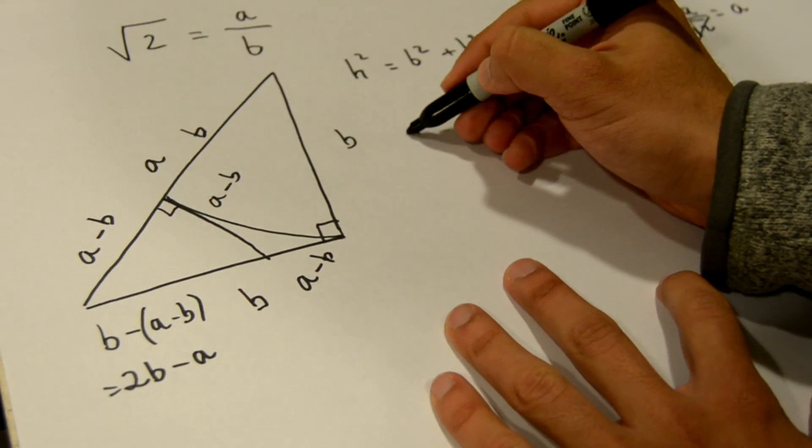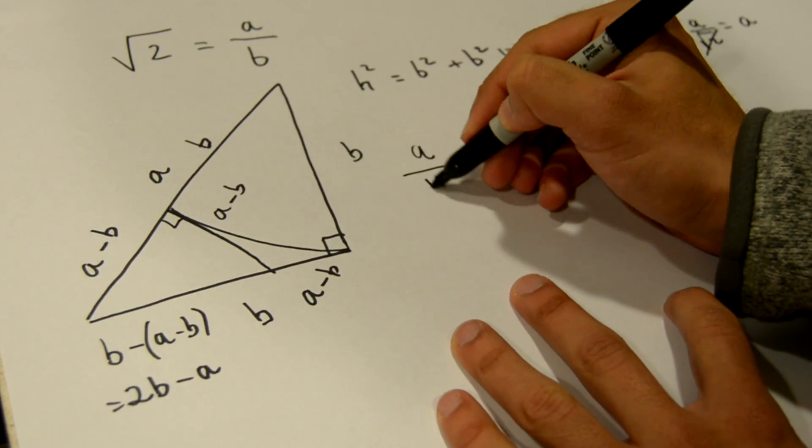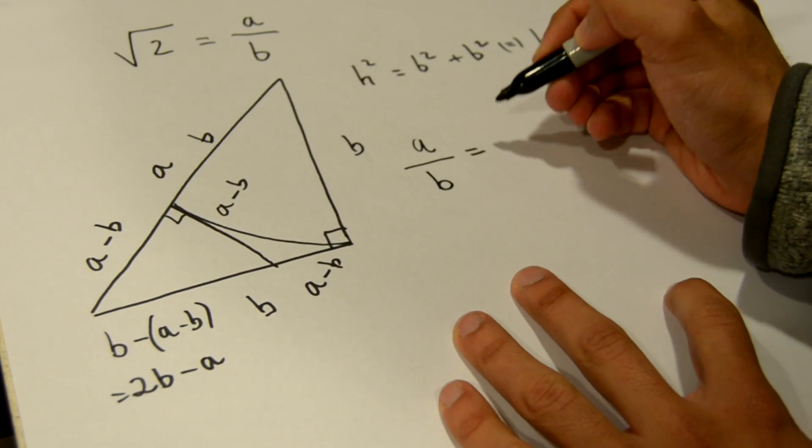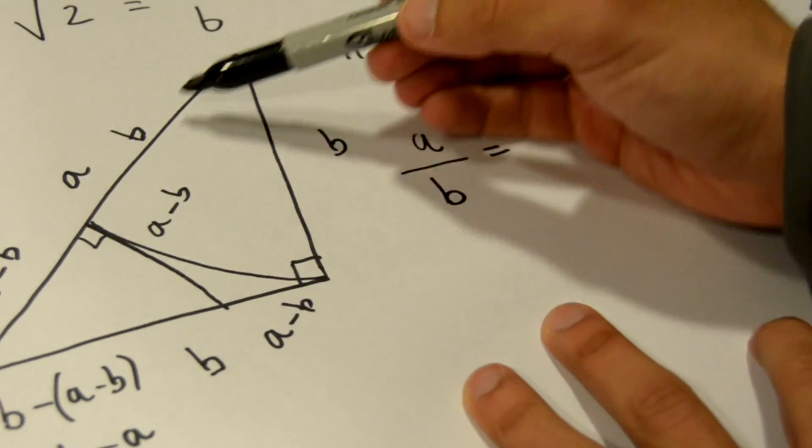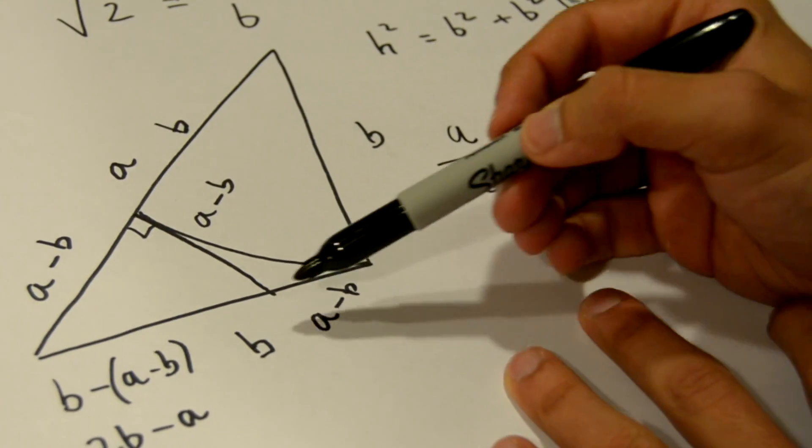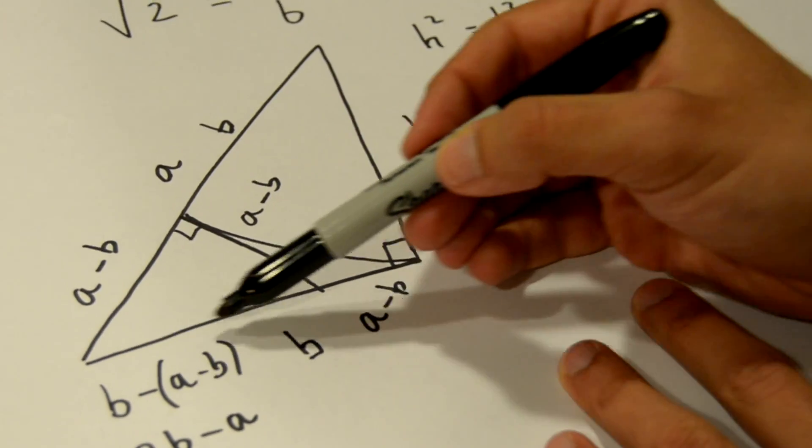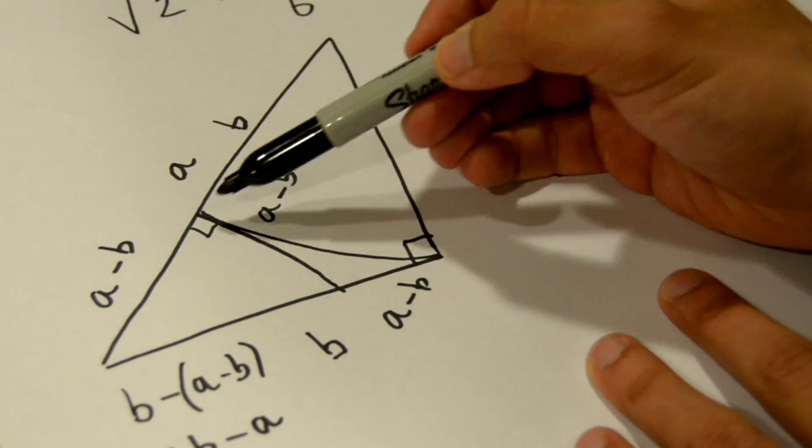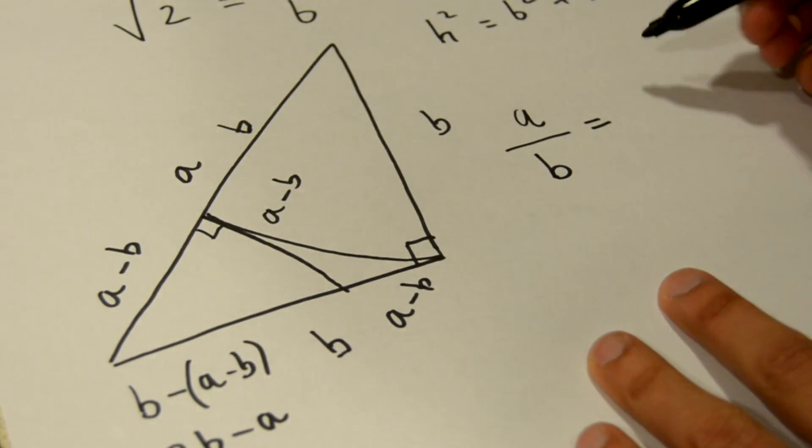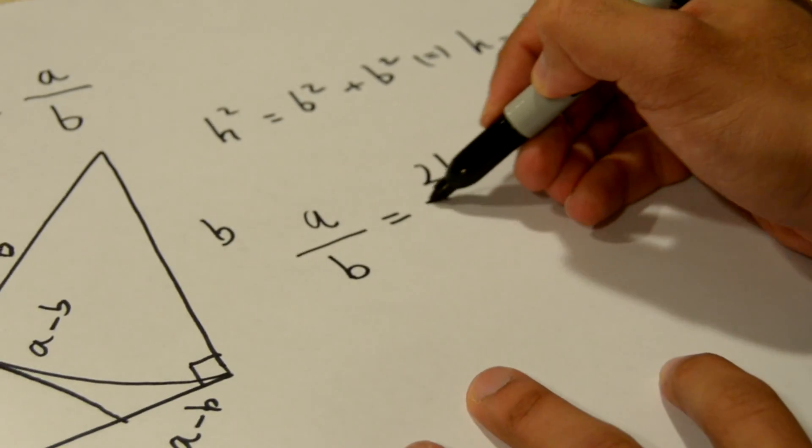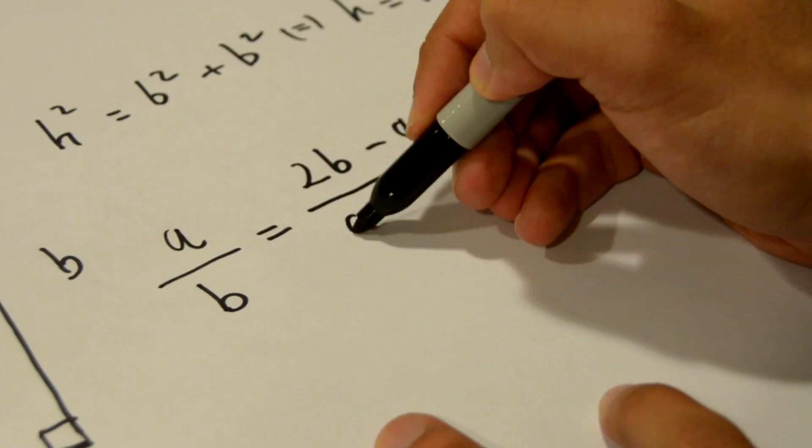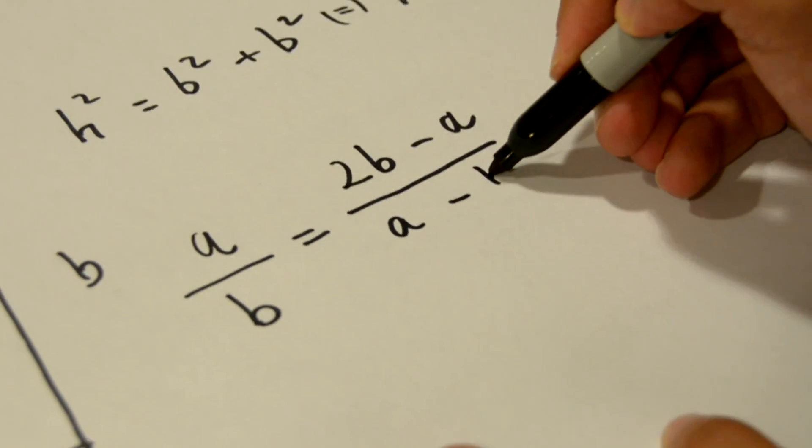we have a over b has to equal the ratio of the hypotenuse to this side, which equals 2b minus a over a minus b.